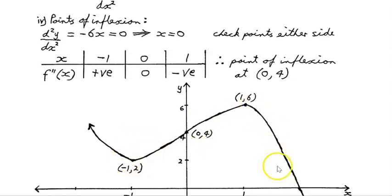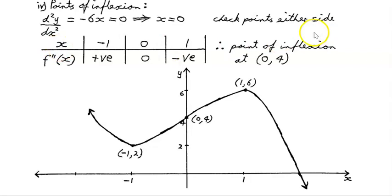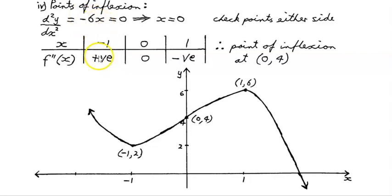Looking at the sketch, the first derivative has the same sign either side of x equals 0, which confirms the second derivative is the clearer tool. We check the sign of the second derivative either side: we can pick x equals minus 1 and x equals plus 1. At x equals minus 1, minus 6 times minus 1 is positive. At x equals plus 1, minus 6 times plus 1 is negative. So the second derivative changes sign either side of x equals 0 — therefore it is a point of inflection, with y equals 4.